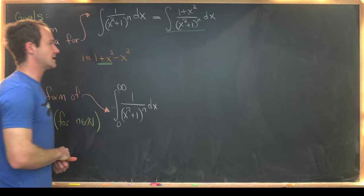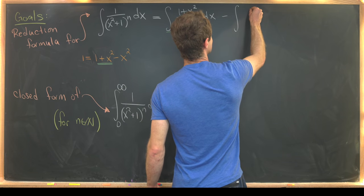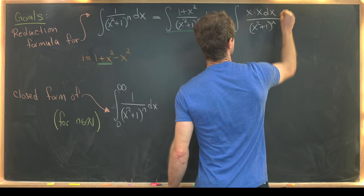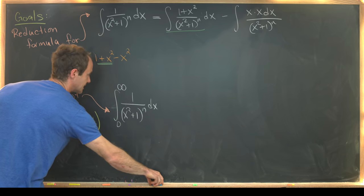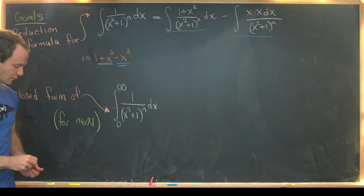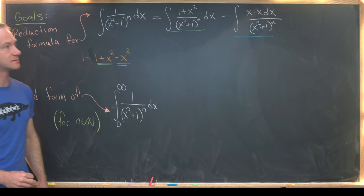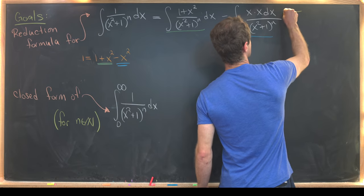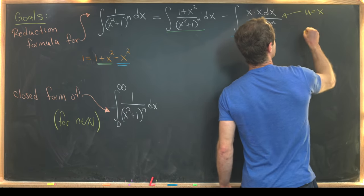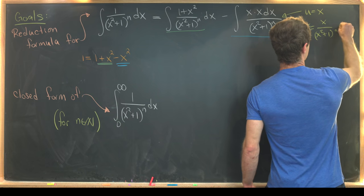I'll underline that in green. Then we'll have minus the integral of x squared — but I'm actually going to write that as x times x dx over x squared plus 1 to the n. You might ask why I wrote it as x times x dx, and I did that so I could use integration by parts.